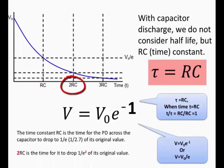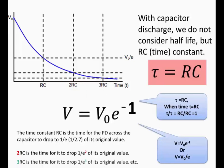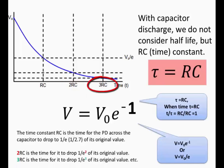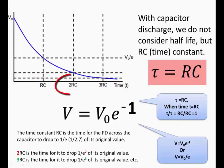2RC is the time for the voltage to drop to 1 over e times 1 over e, which is 1 over e squared of its original value. And 3RC is the time for it to drop to 1 over e cubed of its original value. So we start at V₀. After RC it drops to 1 over e of its original value. After 2RC it drops to 1 over e of that value. After 3RC it drops to 1 over e of that value again.